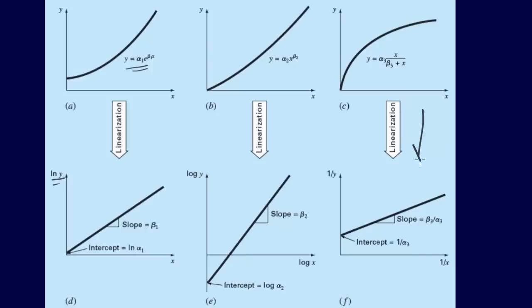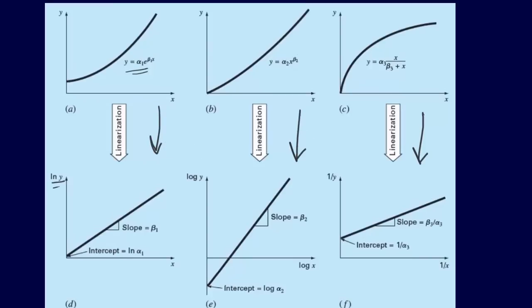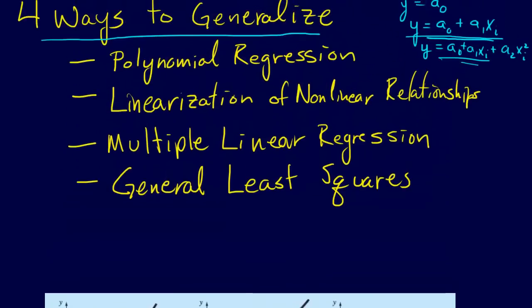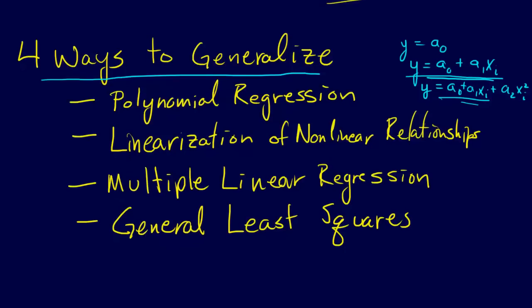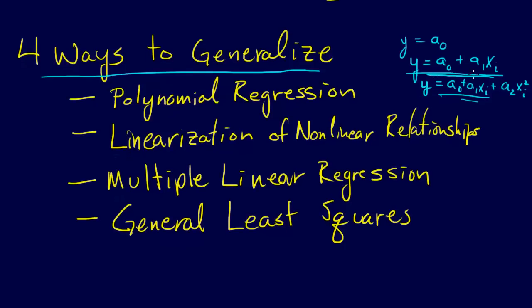In every one of these cases, we can turn the nonlinear relationship into a linear relationship. And then once we've transformed it, then we can just solve our same equation that we've been solving before, y equals a naught plus a1 xi. And then we can just turn it back. So that's linearization of nonlinear relationships.